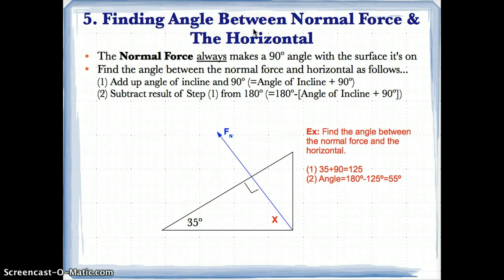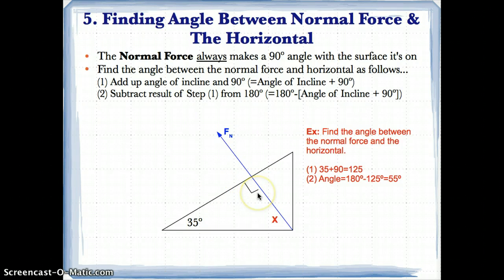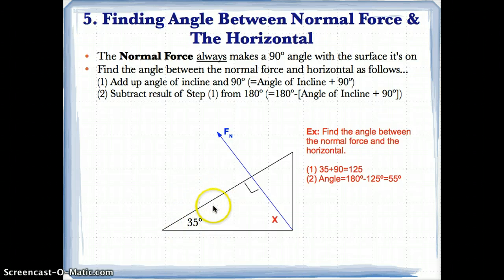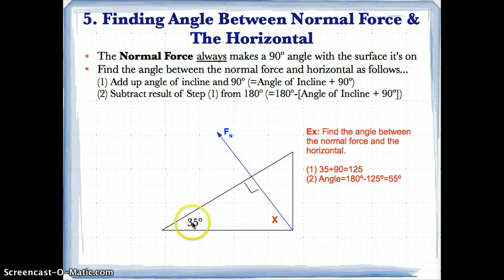Now let's talk about finding the angle between the normal force and the horizontal. The normal force always makes a 90 degree angle with the surface it's on, which is why a right angle is drawn there. In order to find the mystery angle x between the normal force and the horizontal, we need to add up the angle of the incline — for example 35 degrees — and the 90 degree angle. We know the sum of all angles in our triangle is 180, so 35 plus 90 plus x equals 180.